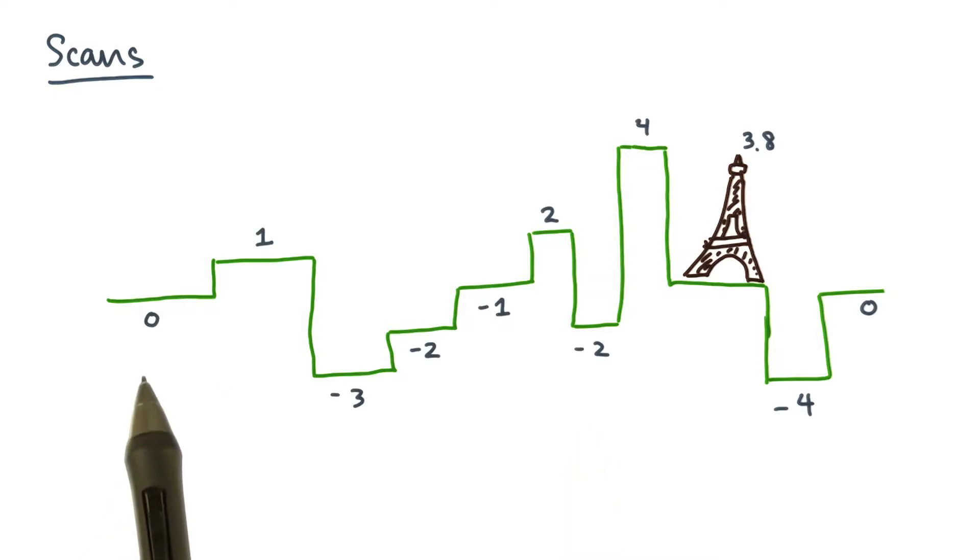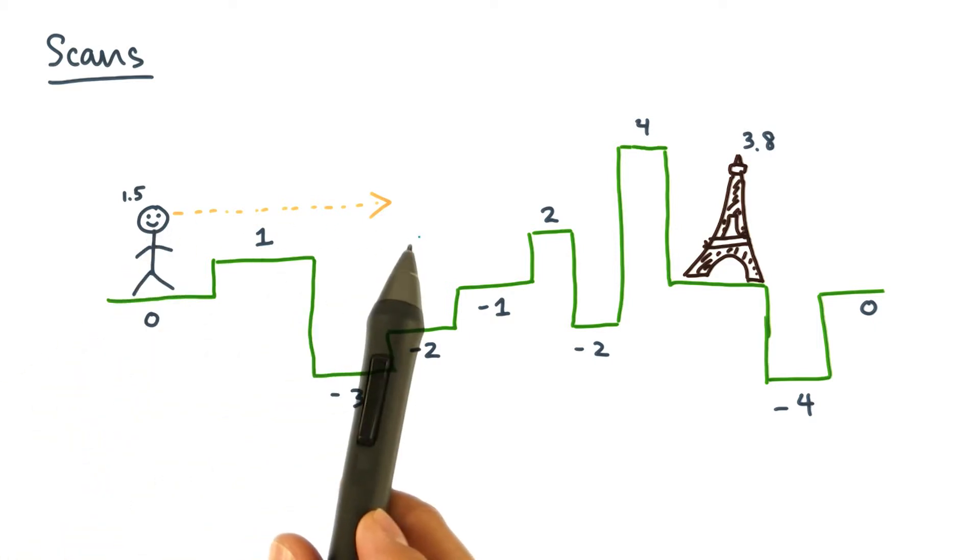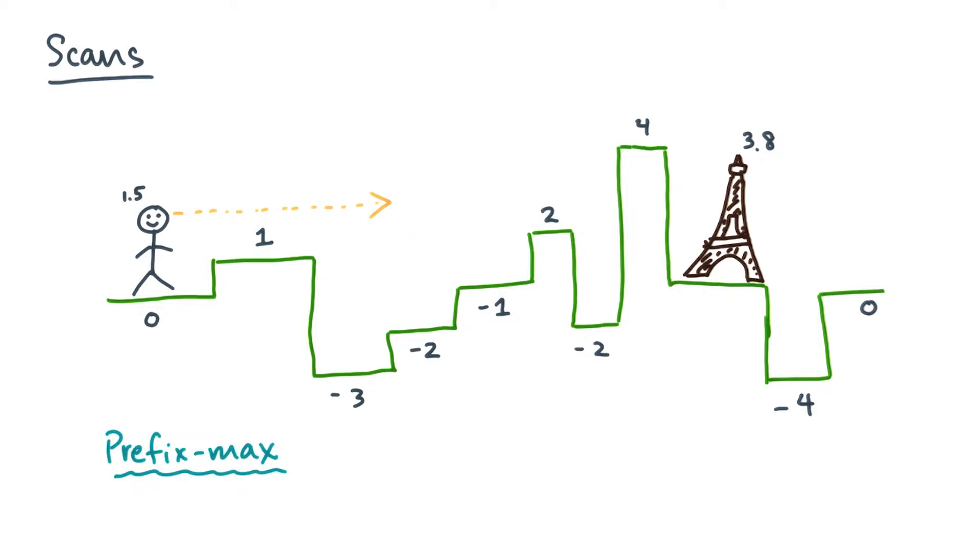Now suppose at each point in this terrain you actually know the elevation, here labeled as integers. Now suppose you have a friend who stands here and looks straight ahead. What will he or she be able to see without occlusion? I claim one way to figure it out is to do a prefix max computation.